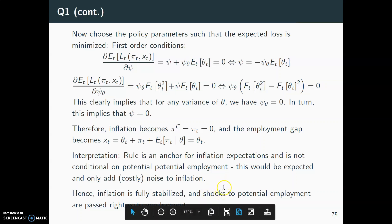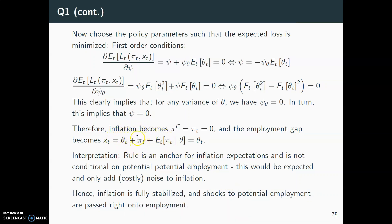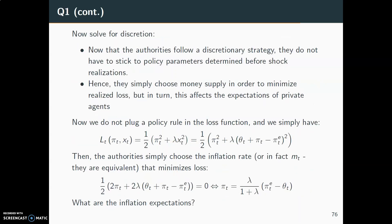Note that there is a typo on the slide — in the definition of x_t implementing rational expectations on π_t, there should be a minus instead of a plus. Now we solve for the discretionary case. When authorities follow a discretionary strategy, they don't have to stick to policy parameters determined before shock realizations. They don't commit to ψ and ψ_θ — they simply choose π_t in the fourth step of the timing, choosing money supply m_t equal to π_t to minimize realized loss.